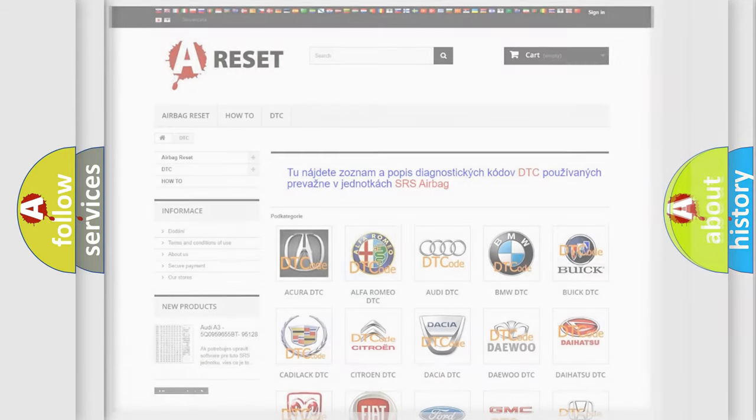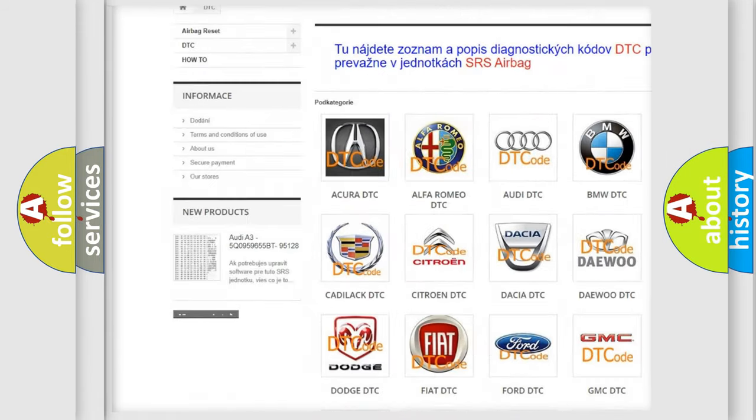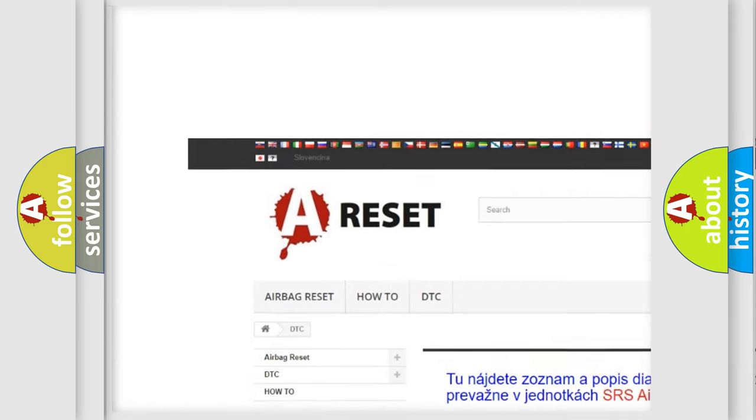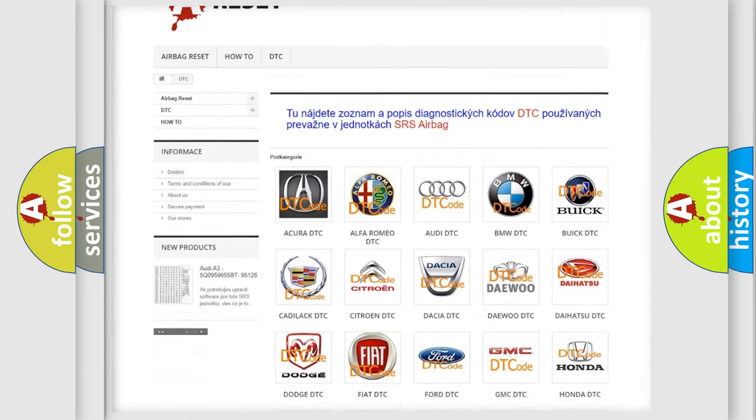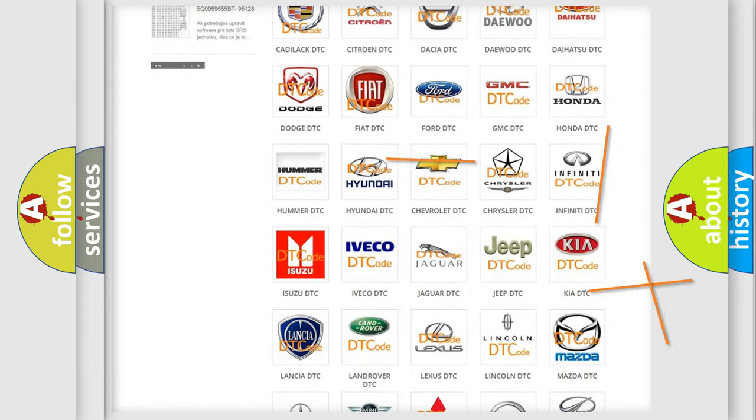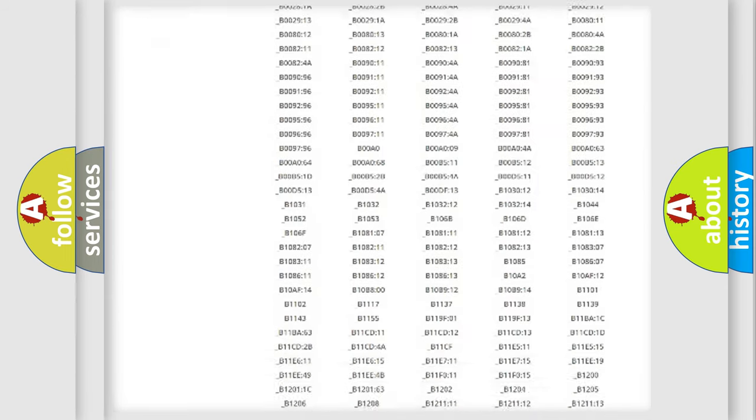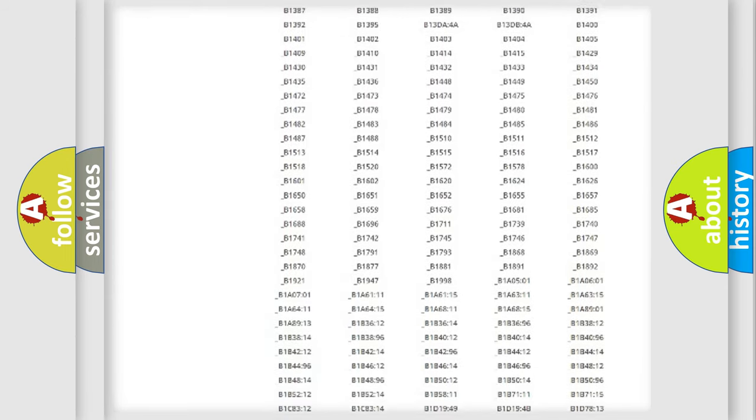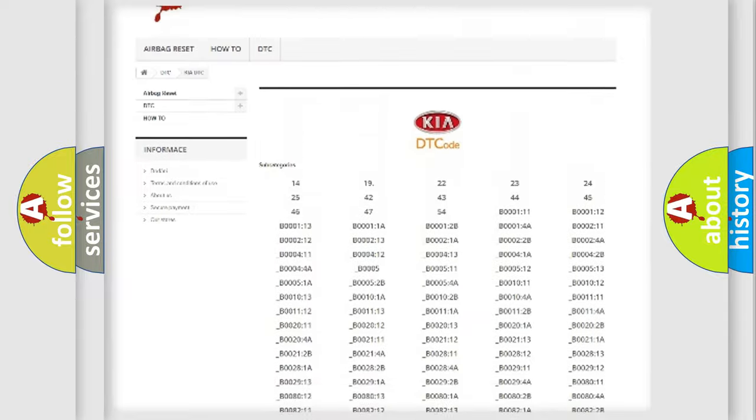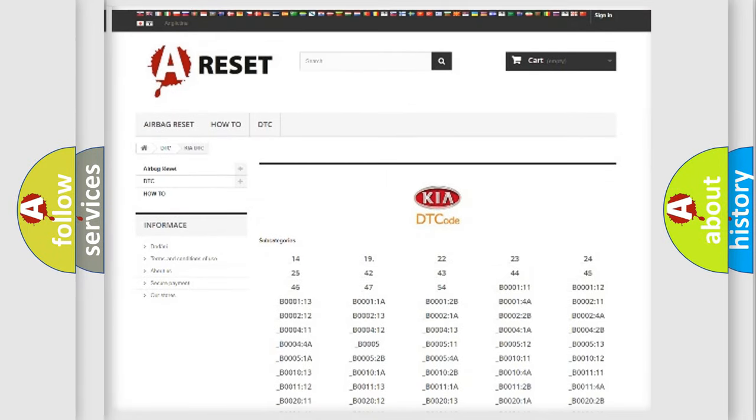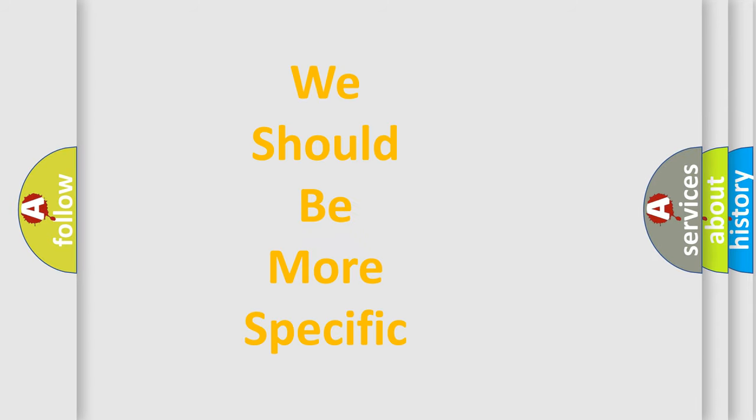Our website airbagreset.sk produces useful videos for you. You do not have to go through the OBD2 protocol anymore to know how to troubleshoot any car breakdown. You will find all the diagnostic codes that can be diagnosed in Kia vehicles, and many other useful things. The following demonstration will help you look into the world of software for car control units.